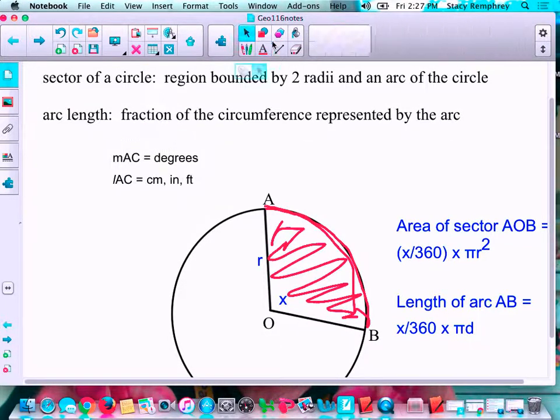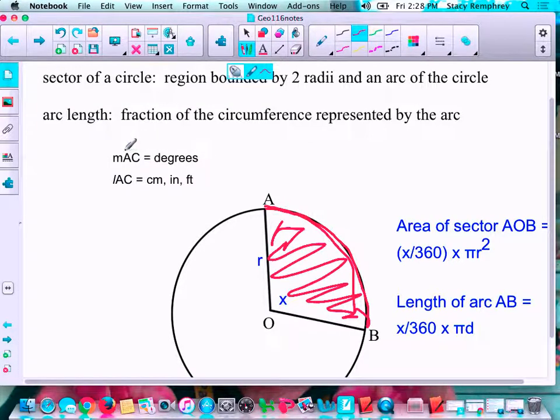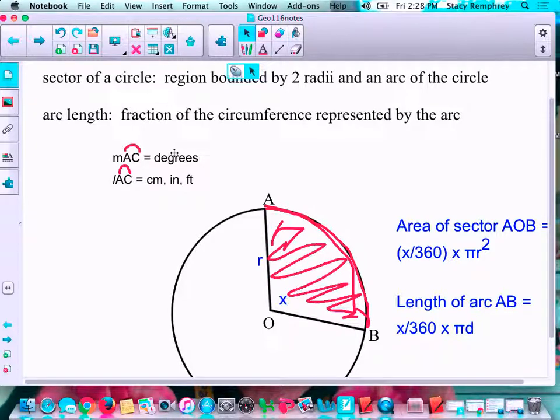So you do need to look at the notation. I'm going to put the arc symbols above there for you. So arc AC. If it's an M, it's asking for a degree measure, which is what you did in chapter 9. If there's a cursive L there, they're looking for the actual length from A to B.